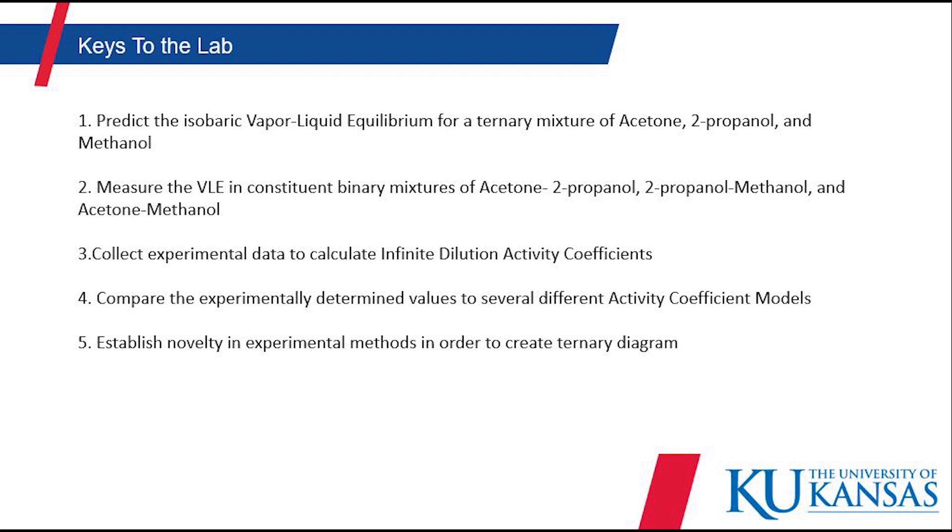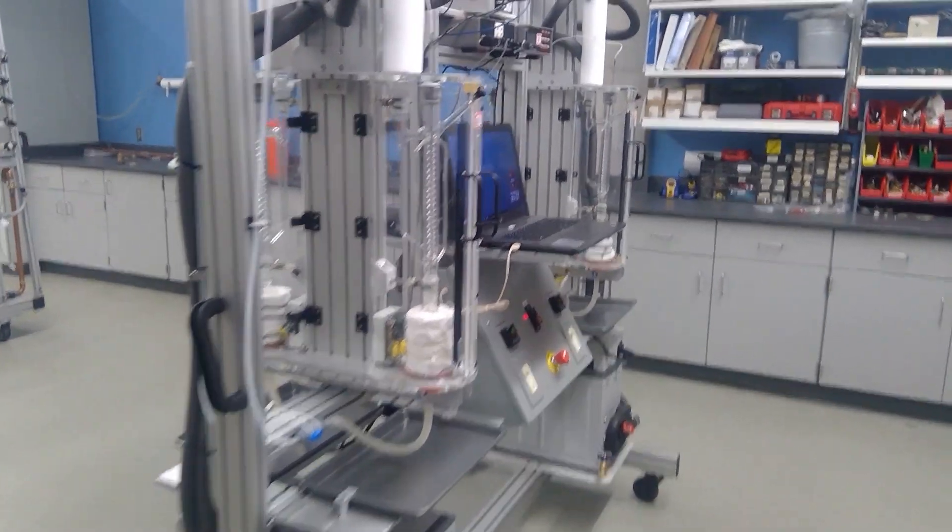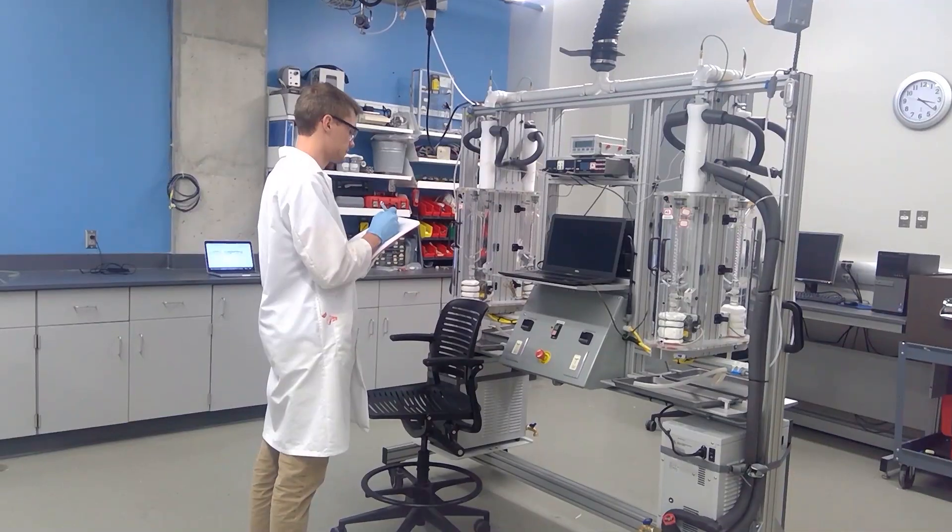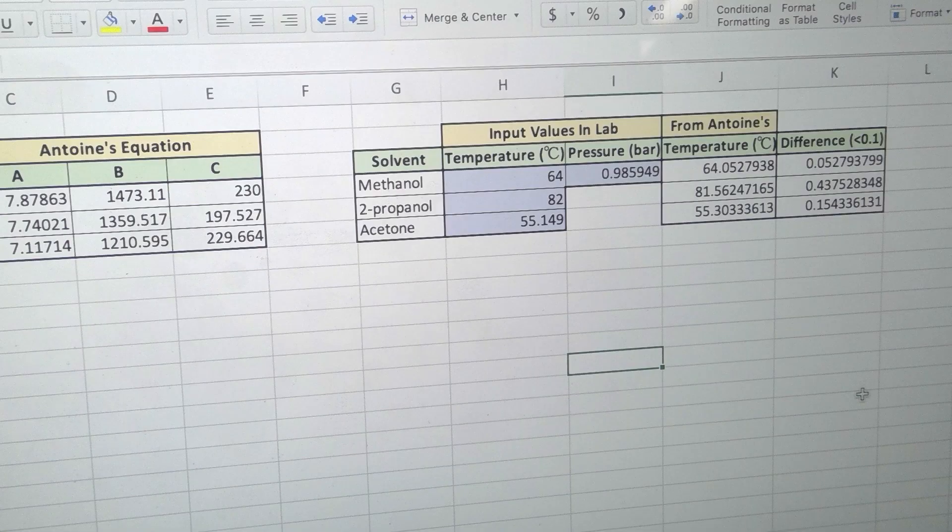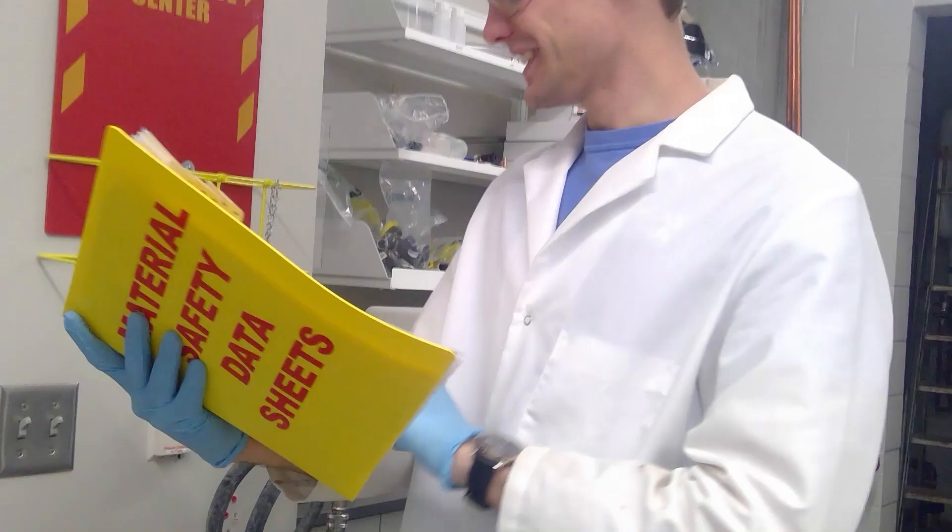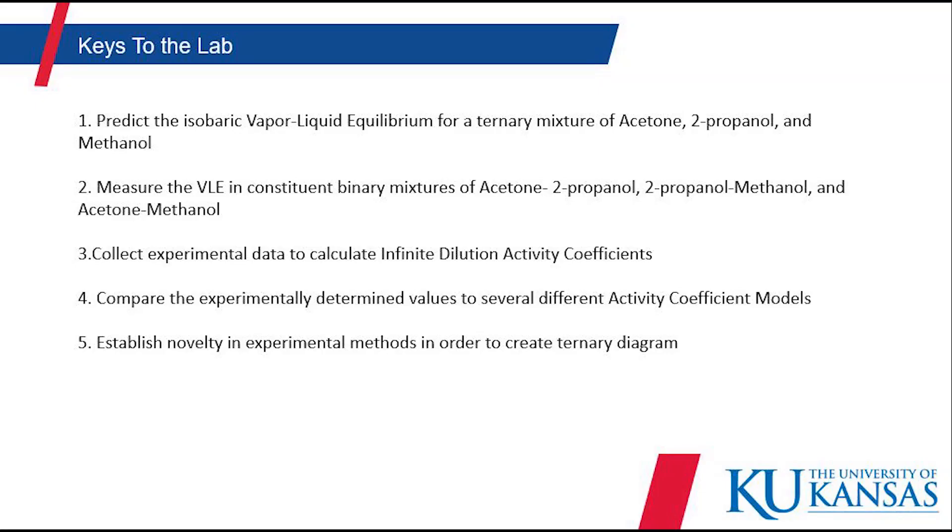Thanks, Colin. Today's keys to the lab include: predict the isobaric vapor-liquid equilibrium for a ternary mixture of acetone-2-propanol-methanol, measure the VLE and constituent binary mixtures, collect experimental data to calculate the dilution activity coefficients, compare the experimentally determined values to activity coefficient models, and to put on a good show.